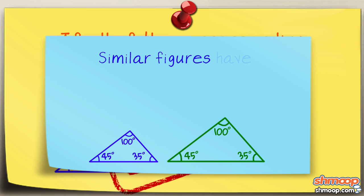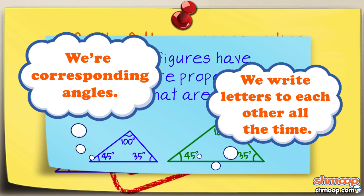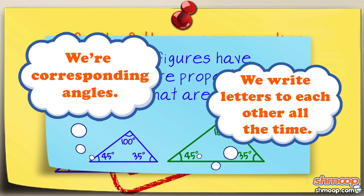So, we know that similar figures have sides that are proportionate, and angles that are congruent. Why might you need to pop this information into your brain?